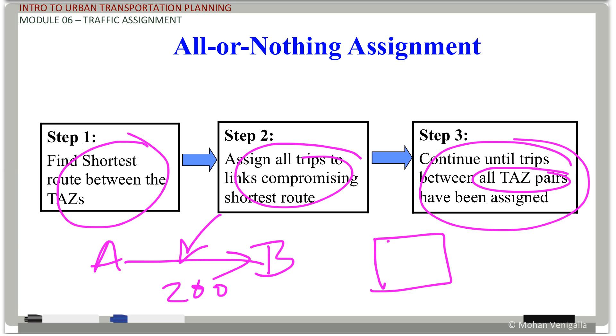So in other words if you have a thousand by thousand matrix you do that. You build that path tree for thousand origin zones and then loop over to get your thousand paths for each origin zone.